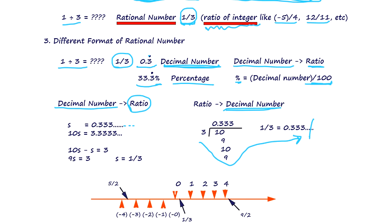You multiply by ten, and it becomes 3.3333. Then you subtract S from 10S, which eliminates all the decimals. Only three is left. And 10S minus S gives S equals one over three.